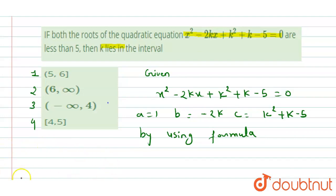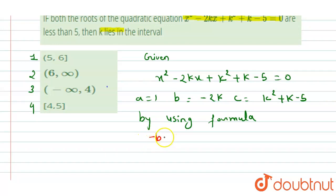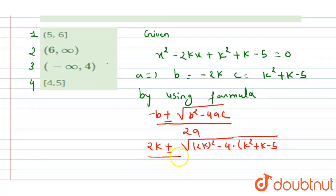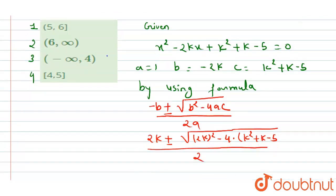Our formula is minus b plus minus square root of b squared minus 4ac over 2a. This gives us 2k plus minus square root of 4k squared minus 4(k squared plus k minus 5) over 2. When we solve this,